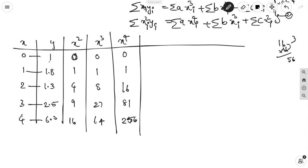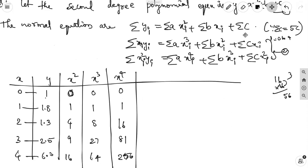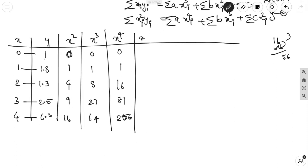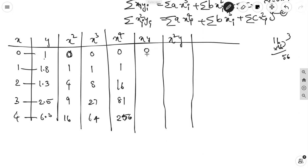Next, to find xy values — the product of x and y: 0×1 = 0, 1×1.8 = 1.8, 2×1.3 = 2.6, 3×2.5 = 7.5, 4×6.3 = 25.2.